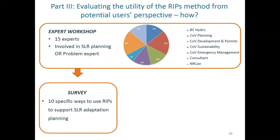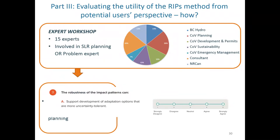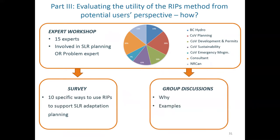The survey asked participants if they think they can use this type of information to support sea level rise adaptation planning in 10 different specific ways. For example, one question was: 'The robustness of the impact patterns can support development of adaptation options that are more uncertainty tolerant.' Participants responded on a scale of one to five, from strongly disagree to strongly agree, and could explain their answers. We also divided them into groups for discussion to explore why this type of information can or cannot help their planning work, and to come up with practical examples.